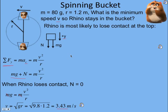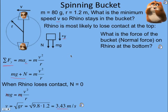Let's look at something else. What is the force of the bucket, in other words the normal force, on Rhino at the bottom? We set it equal to zero at the top. Is it going to be zero at the bottom? We don't wonder, we're going to solve for that.